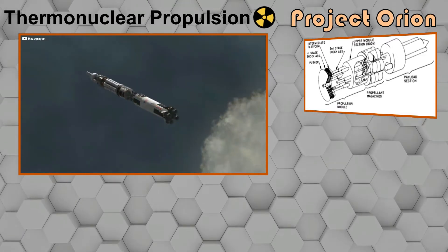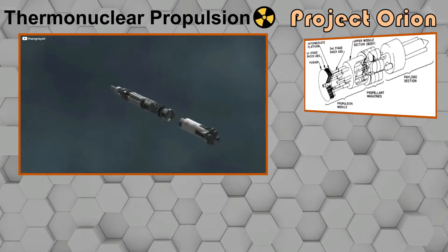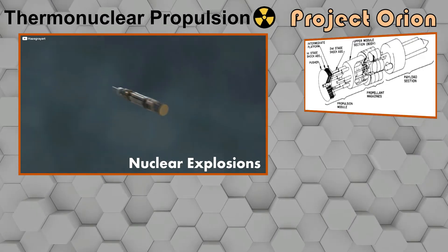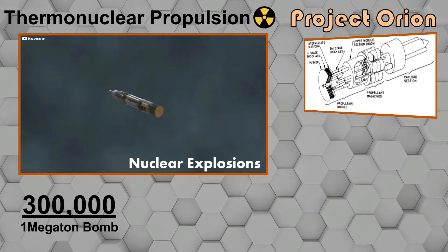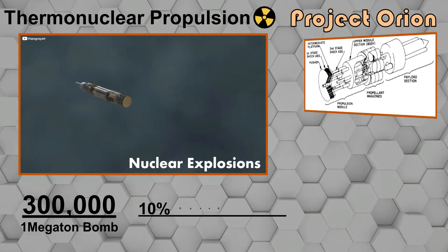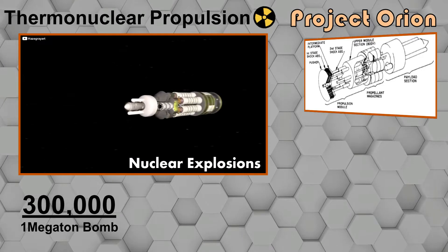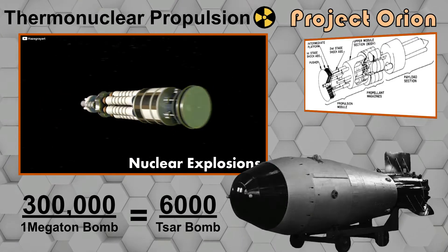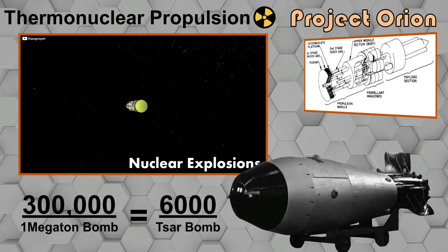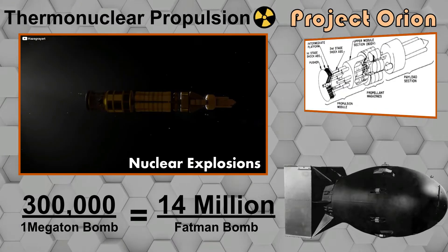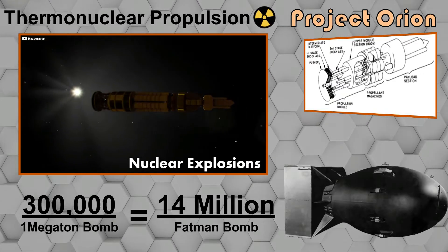The idea was to propel a 4,000-ton spaceship using series of nuclear bomb explosions behind the craft. In total, 300,001 megaton bombs were required to propel the spacecraft at 10% speed of light over the period of one month. Which is equivalent roughly 6,000 of the Tsar bomb by Soviet, the most powerful nuclear bomb ever made, or roughly 14 million of Fat Man bomb dropped by USA on Nagasaki.